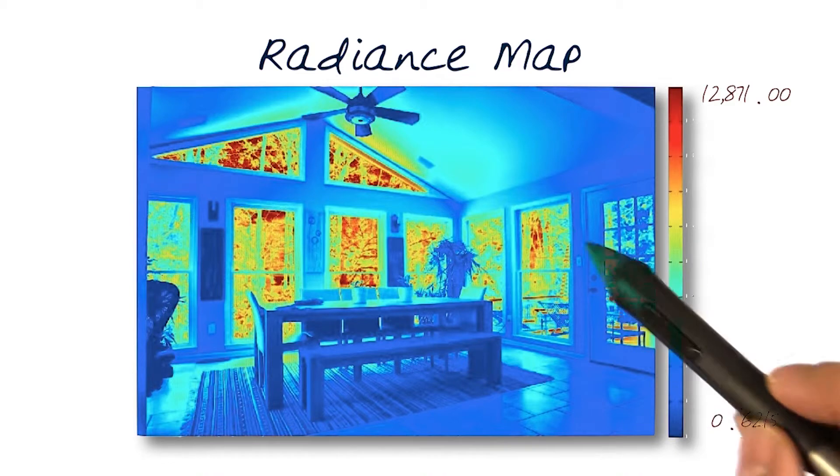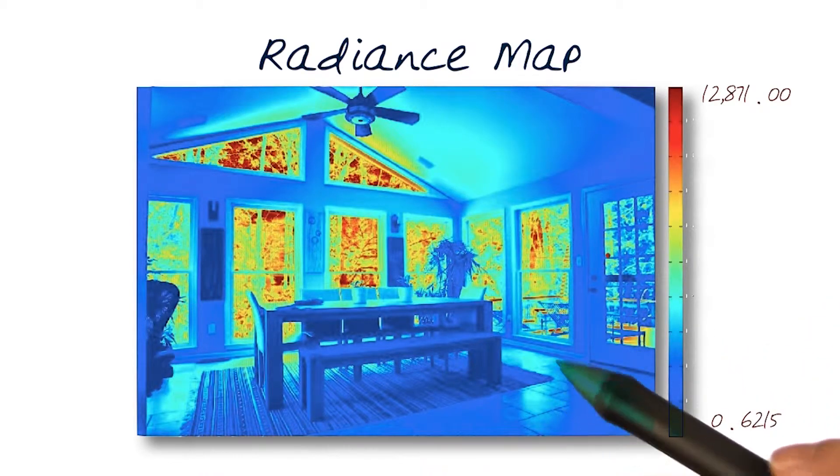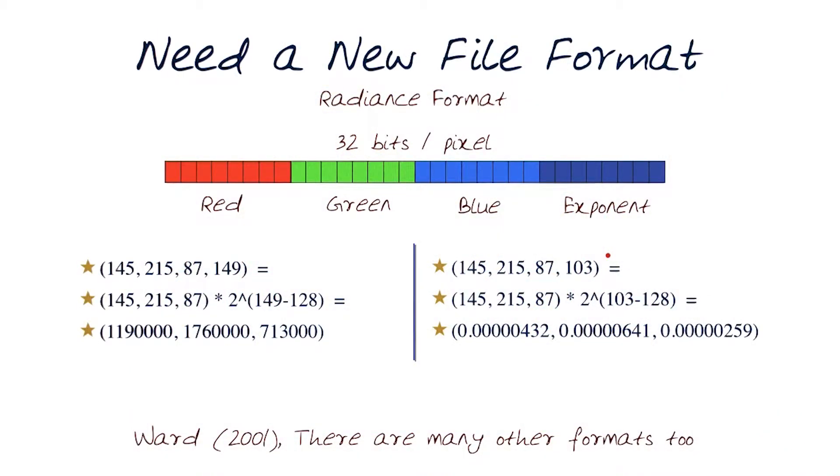But you see a lot of detail, and there are really bright spots out there. Of course, now we need to study how we're going to take this radiance map and create an image. Before we go there, we need to think about what kinds of file formats we can use to save images like this.